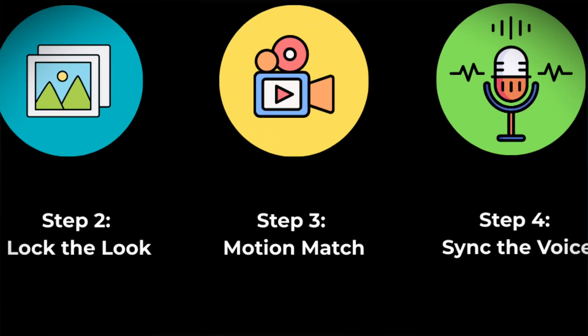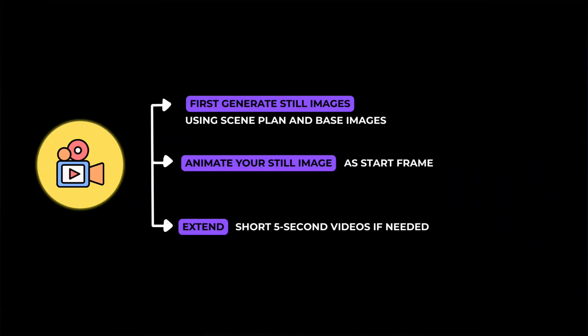Step three is to generate stills first, then animate. This is where most AI video drift gets fixed. You separate stills from animation because a still image is your control point — it locks the character's face, body proportions, outfit details, and the exact composition of the shot. If you try to generate motion first, the model starts inventing frames, and that's when the identity slowly shifts: different face, different clothing details, even a different art style. So the workflow is: create the exact frame you want as a clean starting image, then animate that image. This way, the motion becomes an add-on, not a reinvention, and you get way more consistency across scenes.